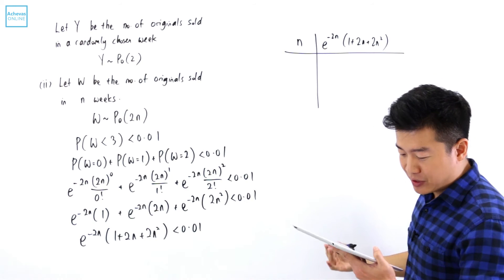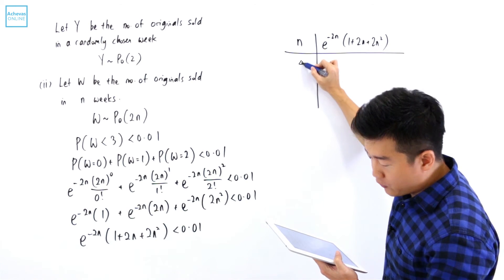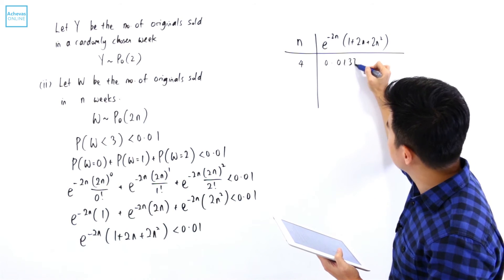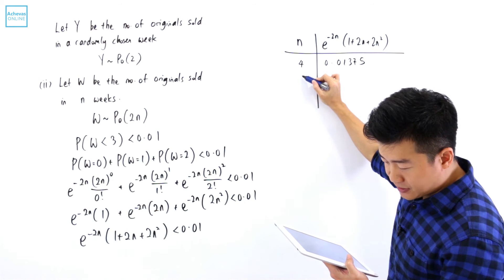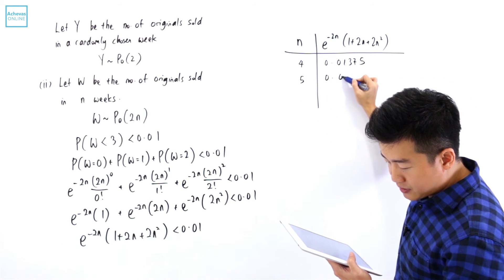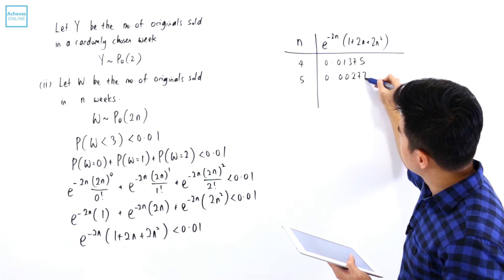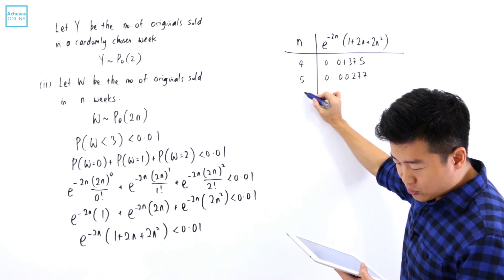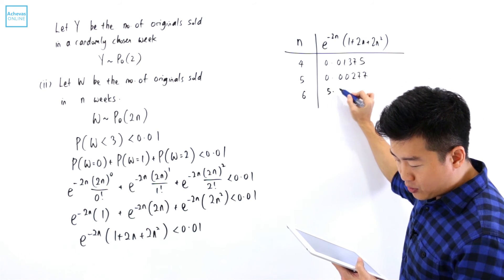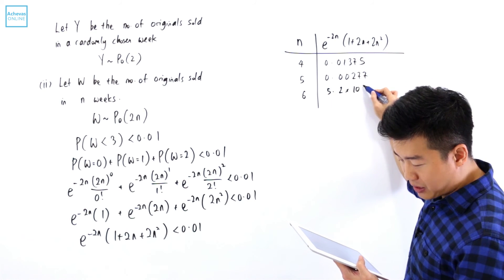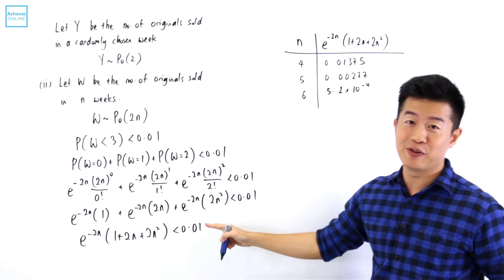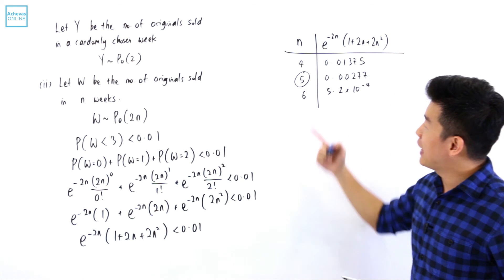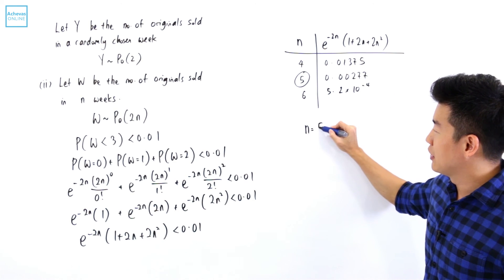Scrolling down the table: when N = 4, the value is 0.01375, which is not less than 0.01. When N = 5, the value is 0.00277, which is less than 0.01. When N = 6, it is 5.2 × 10^(−4), which is also less than 0.01. Therefore, the least possible integer value of N is 5.